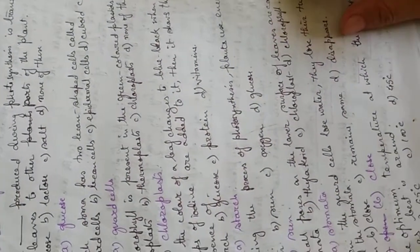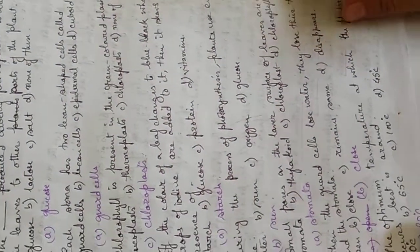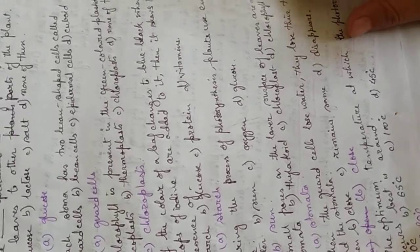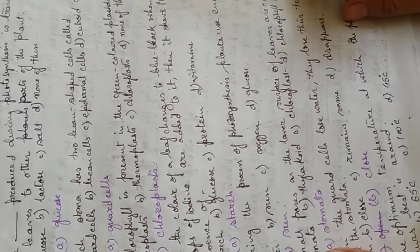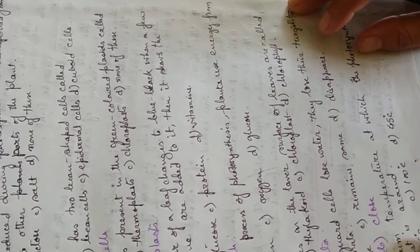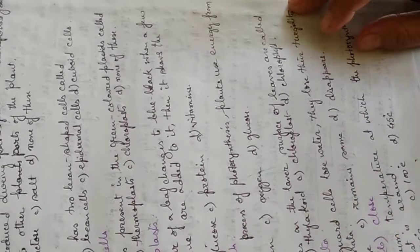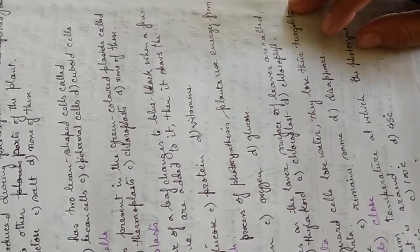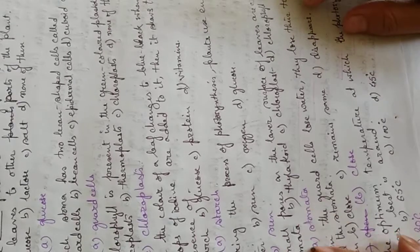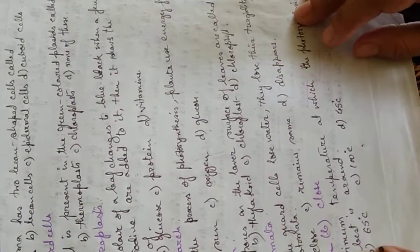Seventh, during the process of photosynthesis, plants use energy from - the options are water, sun, oxygen, or glucose. The answer is the sun.